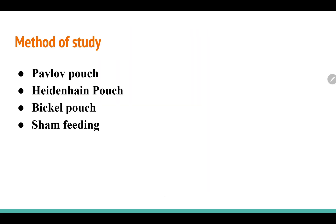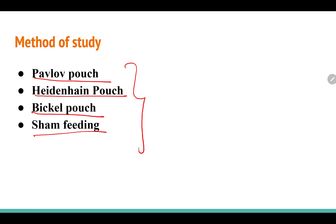The methods of study for gastric secretion are four: Pavlov's pouch, Hayden Hain pouch, Bickel pouch, and sham feeding.